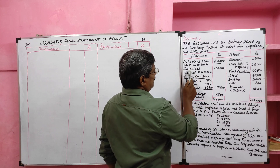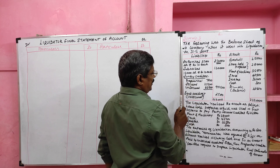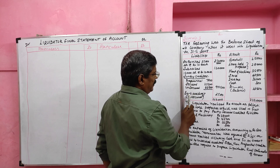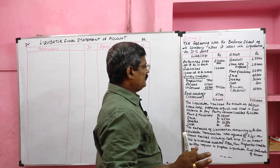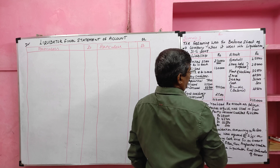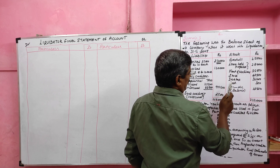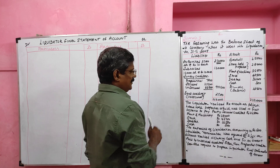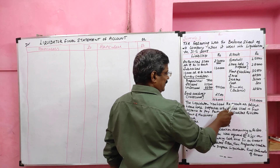The liabilities include authorized share capital, subscribed share capital, and creditors — three types: preferential creditor, secured creditor, and unsecured creditor. Bank overdraft is considered as unsecured creditor. On the asset side: goodwill, leasehold properties, plant and machinery, stock, debtors, cash, and a profit and loss account. The liquidator realized the assets as follows.